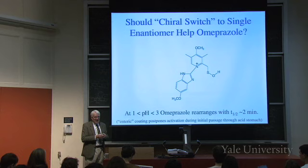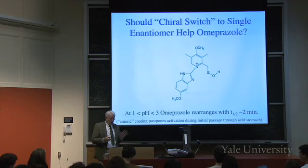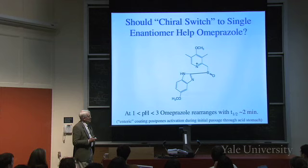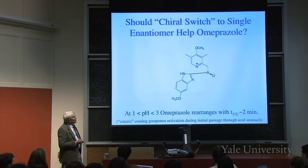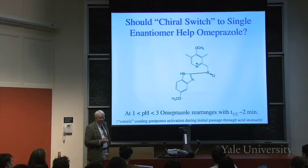Is that going to be important here? If we make a single enantiomer of omeprazole — remember we talked about thalidomide and ibuprofen — will a single enantiomer likely help? There's an interesting observation about the active form that makes it different from the original omeprazole. All that mechanism did was change that bond from one position to another, and the proton from nitrogen to sulfur. But it did something crucial with respect to stereochemistry.